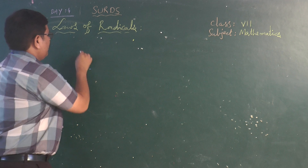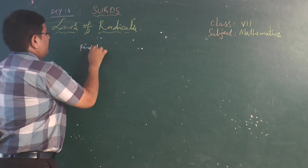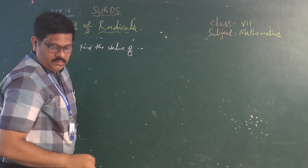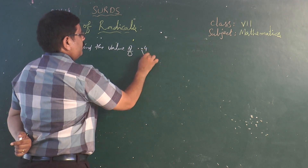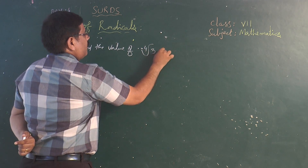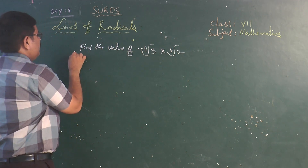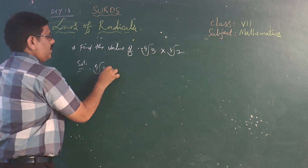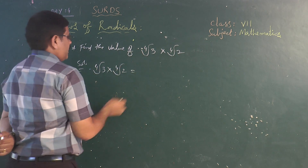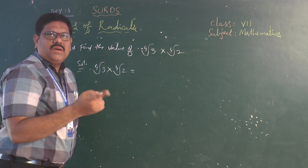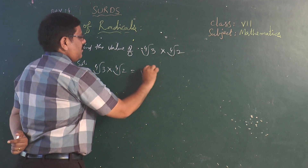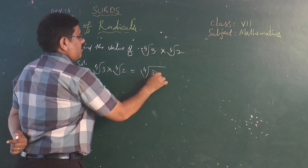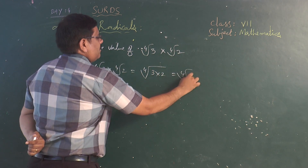Problem 1: Find the value of 4th root of 3 times 4th root of 2. Since both have the same order 4, we can write it as a single surd: 4th root of 3 times 2, that is 4th root of 6.